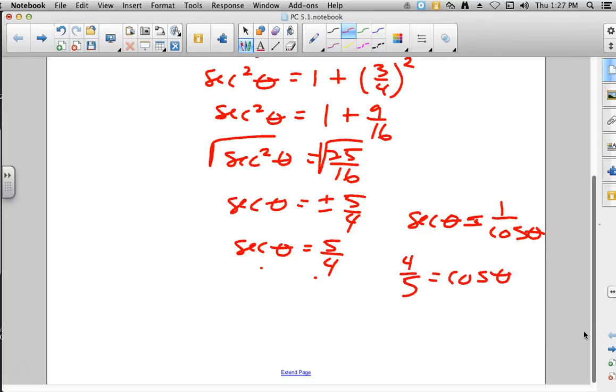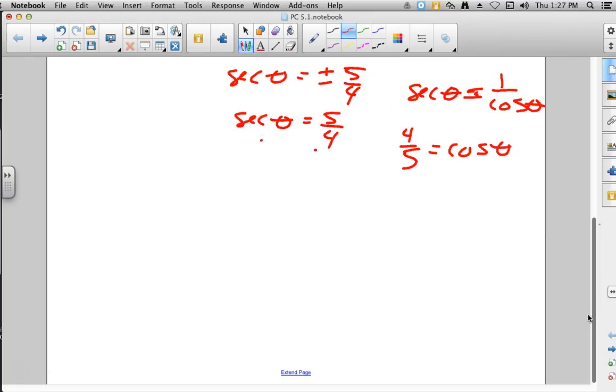So now we have tangent and we have cosine, and we are supposed to figure out what sine is. Well, let's go after another Pythagorean identity at this point and say cosine squared theta plus sine squared theta is supposed to equal 1, and we have 4/5 for cosine, and that's going to be 16/25.